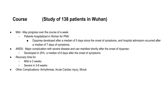From a study of 138 patients in Wuhan, mild disease may progress over the course of a week. Shortness of breath developed after a median of five days from the onset of symptoms, and hospital admission occurred after a median of seven days of symptoms. ARDS — adult respiratory distress syndrome — is a major complication we're seeing here as well, developing in 20 percent at a median of eight days after symptom onset. Other complications include arrhythmias, acute cardiac injury, and shock.